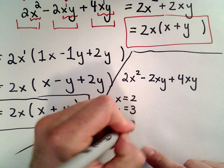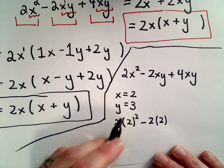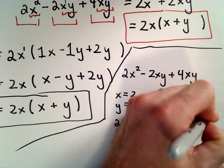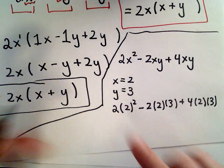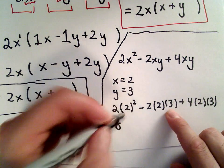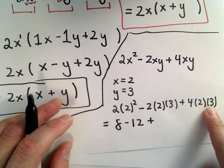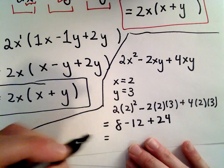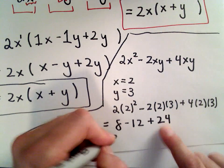So if I put in 2 for x, I would have 2². Again, everywhere there's an x, I'm going to put in a 2. Everywhere there's a y, I'm going to put in a 3. And I'm going to simplify that. So 2² is 4. 4 multiplied by 2, that's 8. Negative 2 times 2 is negative 4 times 3 is going to be negative 12. 4 times 2 is 8, multiplied by 3 is going to be 24. Well, let's see. 8 minus 12, that's negative 4. Negative 4 plus 24, that's going to be 20.